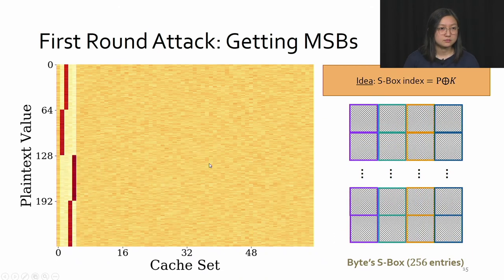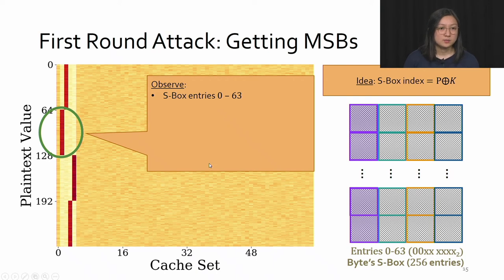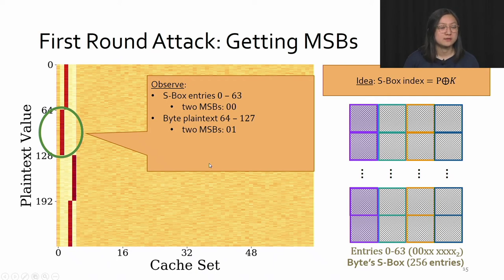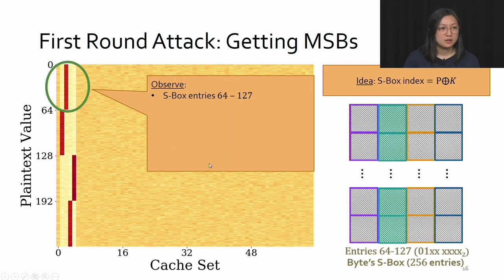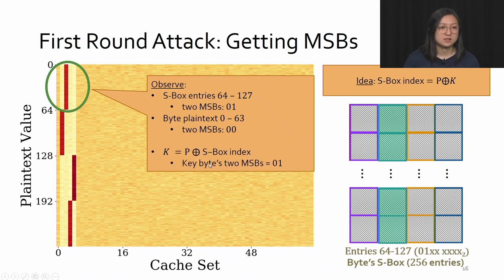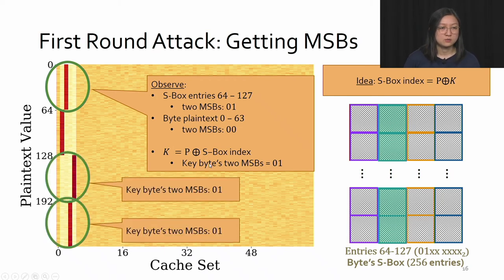Looking at the first 64 S-box entries, they are accessed when the byte's plaintext is set to 64 to 127. Looking at just the two most significant bits: the S-box entries' two most significant bits are 00, and the byte plaintext's two most significant bits are 01. We use that to get k = plaintext XOR index, finding that the key byte's two most significant bits are 01. When we look at the other region of the S-box where entries are 64 to 127, that occurs when the plaintext is set to 0 to 63, and stepping through the same process we again find the key byte's two most significant bits are 01. We can do the same for the other regions and find consistent results.